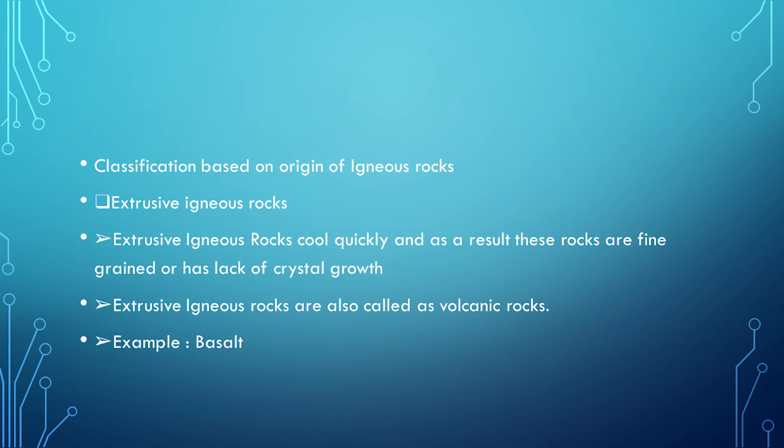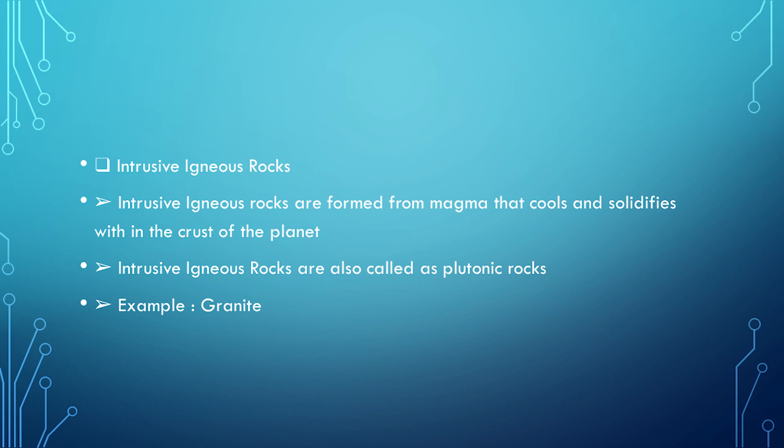Classification based on origin of igneous rocks: extrusive igneous rocks and intrusive igneous rocks. Extrusive igneous rocks cool quickly and as a result are fine-grained or lack crystal growth. They are also called volcanic rocks. Example: basalt. Intrusive igneous rocks are formed from magma that cools and solidifies within the crust of the planet. They are also called plutonic rocks. Example: granite.